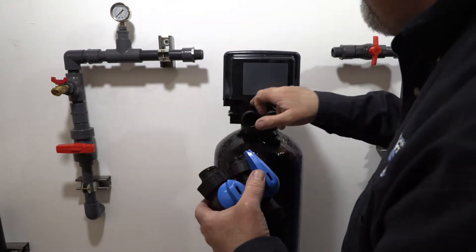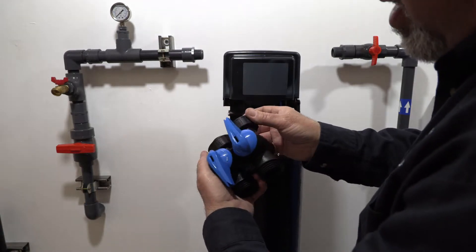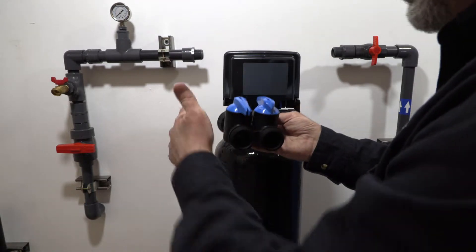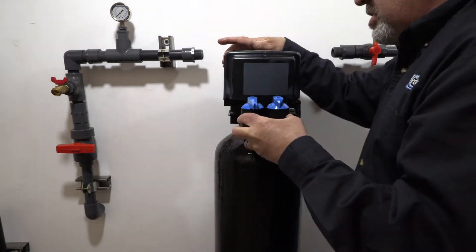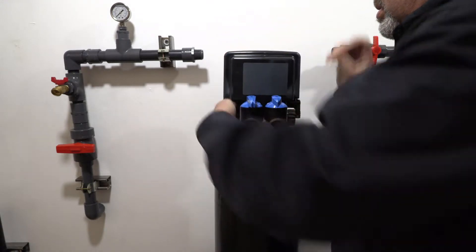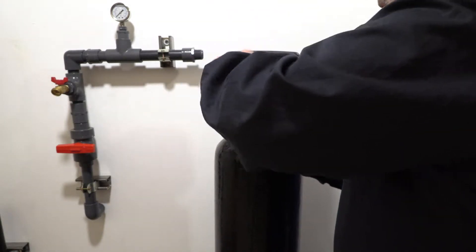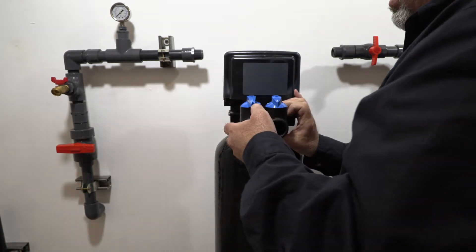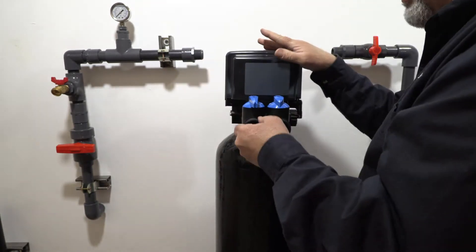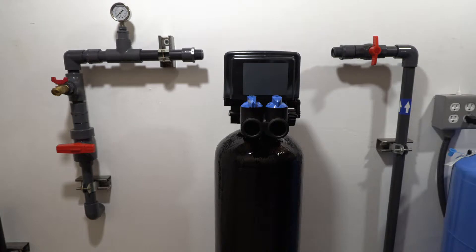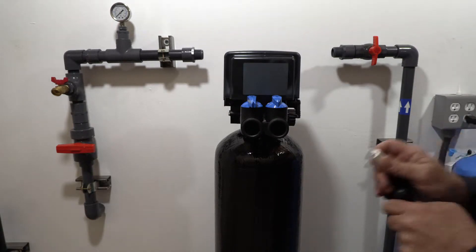On the back of the valve and on the bypass valve you can see there are arrows, so you want to match the arrows, the inlet to the outlet. This guy just slides in like this, and again just hand-tighten the fittings. The o-rings do the seal, so you don't need to worry about that.